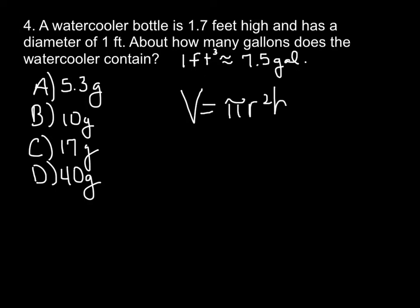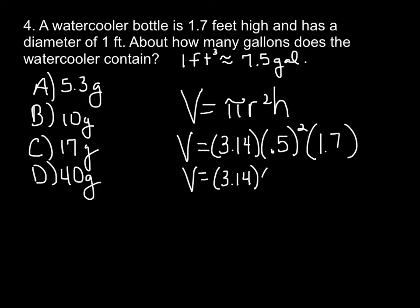So we're going to use volume equals pi r squared times the height. Volume equals pi, which is 3.14. The radius, well we know the diameter is a foot, the radius is half that, so that would be 0.5 squared, times the height, which is 1.7. So we take 0.5 squared. That's going to give us 0.25. Now we just multiply everything together, 0.25 times 3.14 times 1.7 is 1.3345.